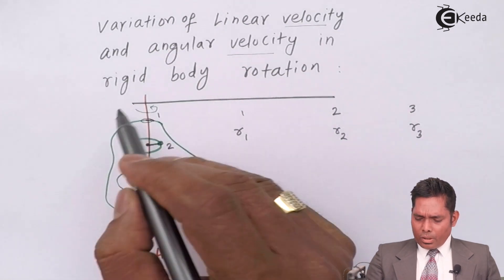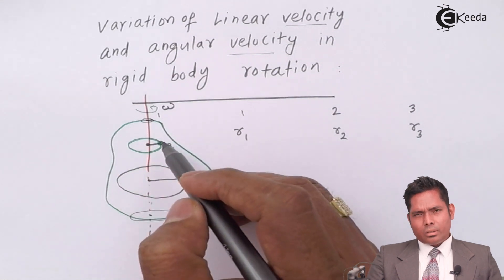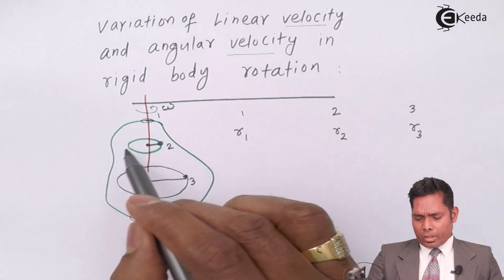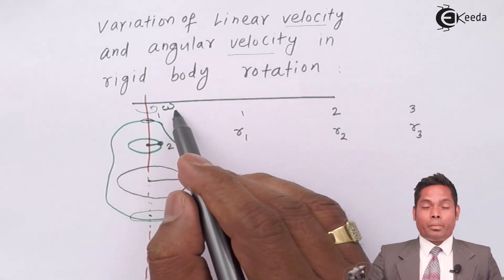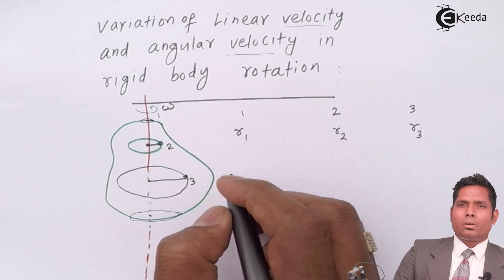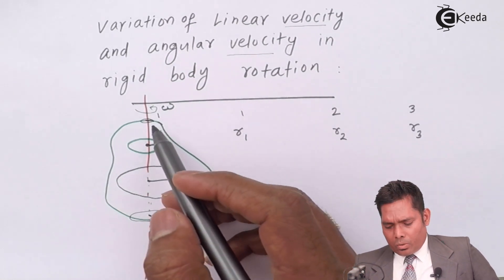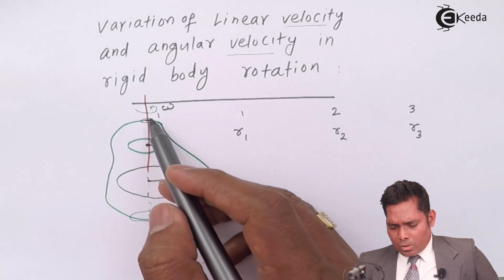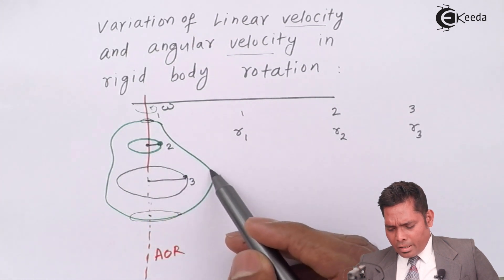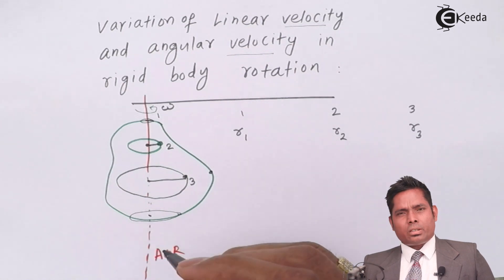Suppose this body is rotating with a constant angular velocity omega. Then each and every point on the body will also make a rotation and angular velocity will also be omega. Because all the points have to reach at the same point again after the same given interval of time. Because the body has to maintain its own shape. Each and every point will have the same omega in rotational motion.